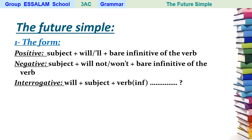We have the positive form: subject plus 'will', or the contraction which is apostrophe double-L, plus the verb in the infinitive. For the negative form, we have subject plus 'will not', and the contraction of 'will not' is 'won't'.